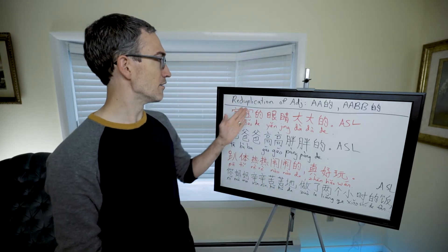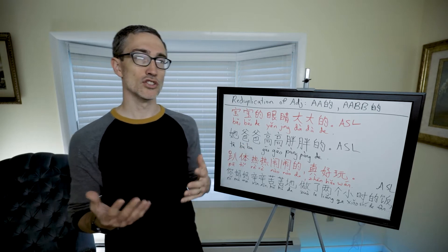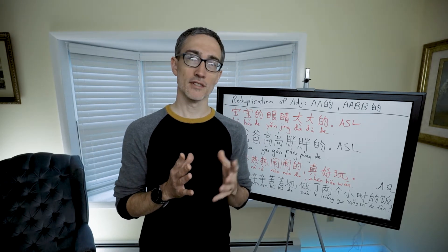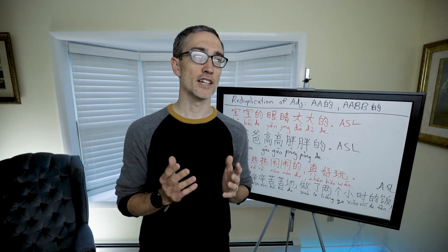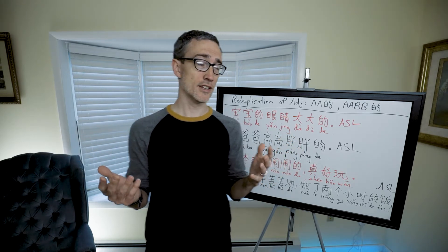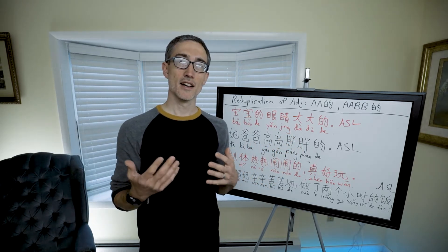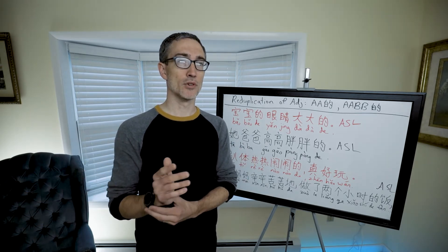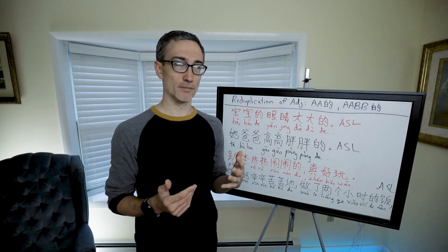Now we're talking about reduplication of adjectives — what does it look like and what does it do? A quote from AllSet Learning: reduplication of adjectives can enhance the descriptive feeling of an adjective. It just makes it feel more descriptive. Often it tends to express an appreciative 'I like this' attitude — for example, 'he's so tall and handsome.'